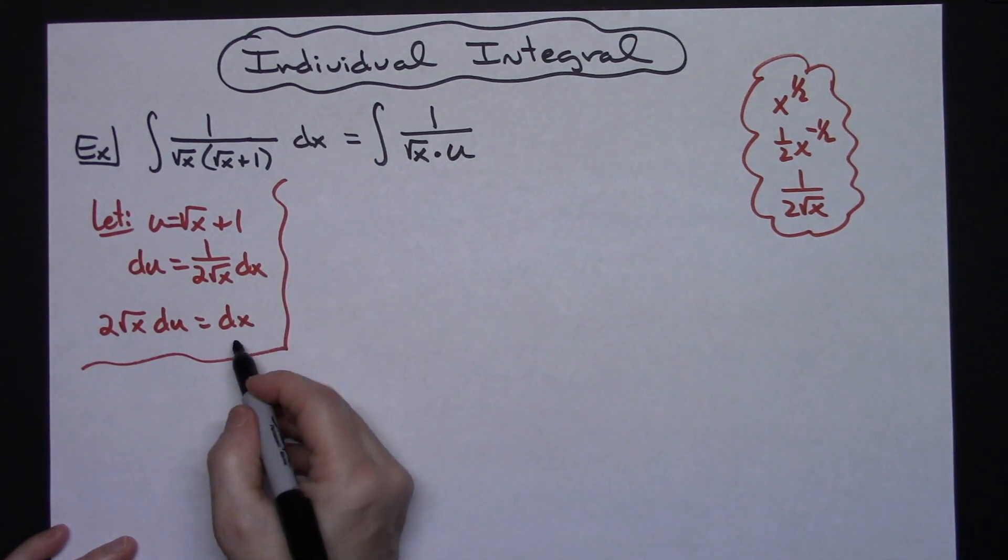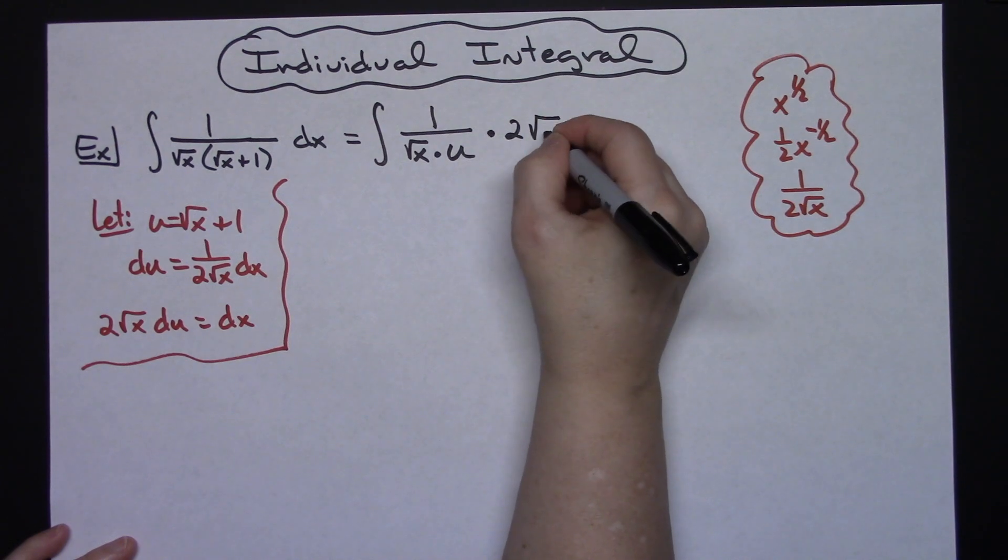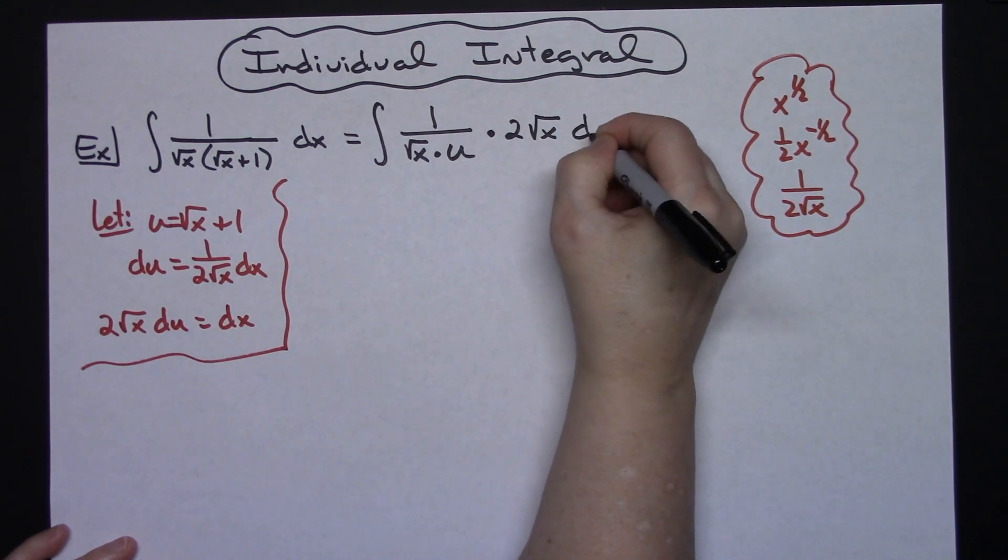And for the dx I'm going to come down here and put what that equals as well. So I will have a 2 square root of x and then du.